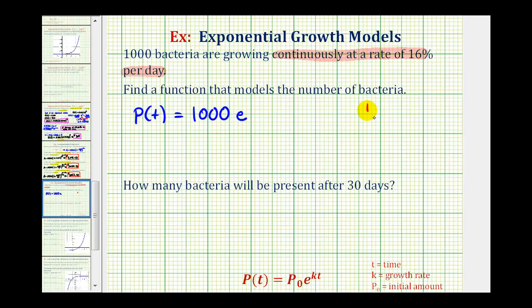Where the continuous growth rate is 16%, expressed as a decimal, it would be 0.16. So the exponent here is going to be 0.16 times t.